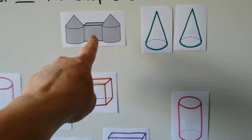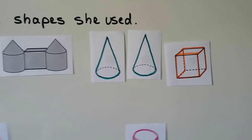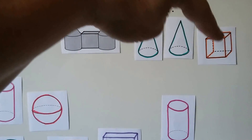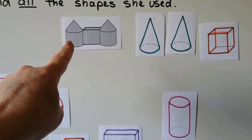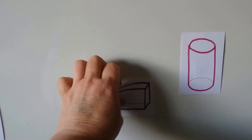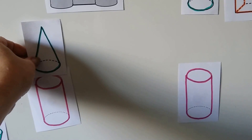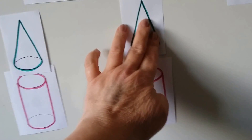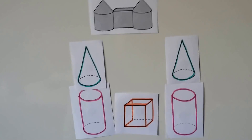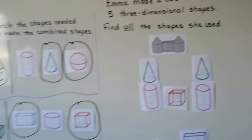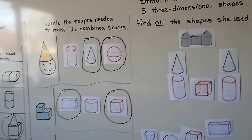There's a cube in the middle, so we can use that. We've got the two cones and the cube. Do you see the cylinder right here? And look, there's another cylinder. So we don't need the other shapes. If we put a cylinder with a cone on top, and another cylinder with a cone on top, and put this cube in the middle — that's how she made that castle.